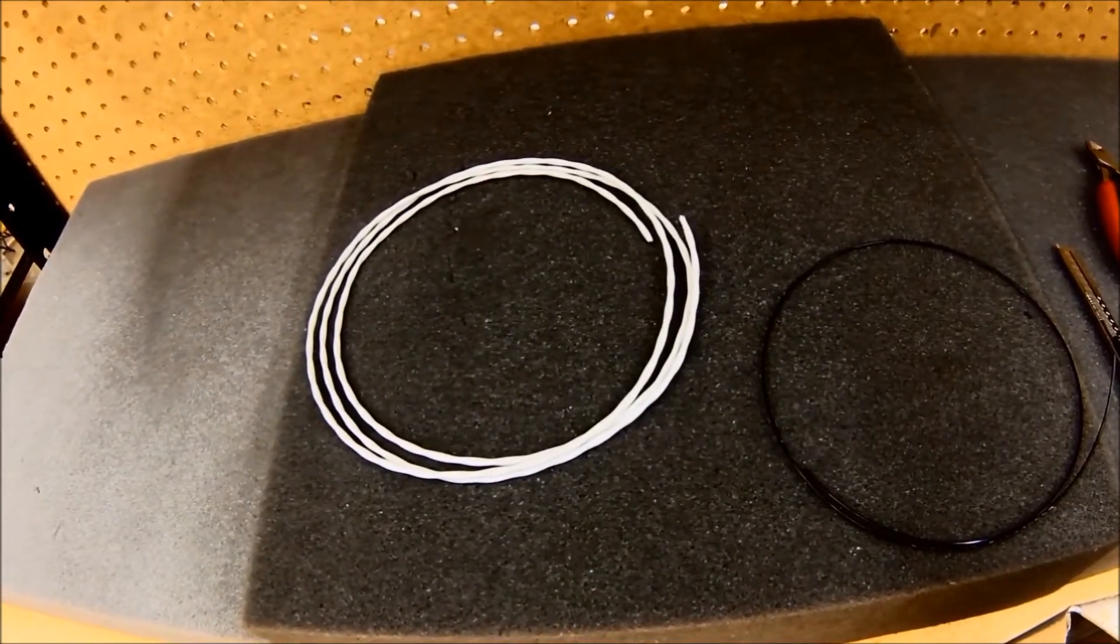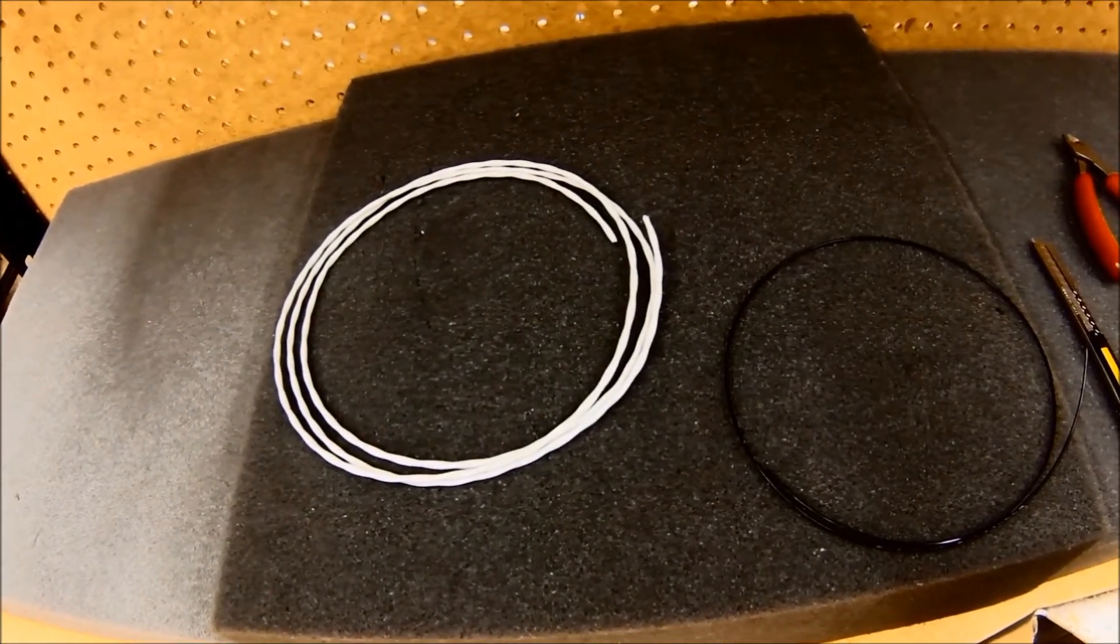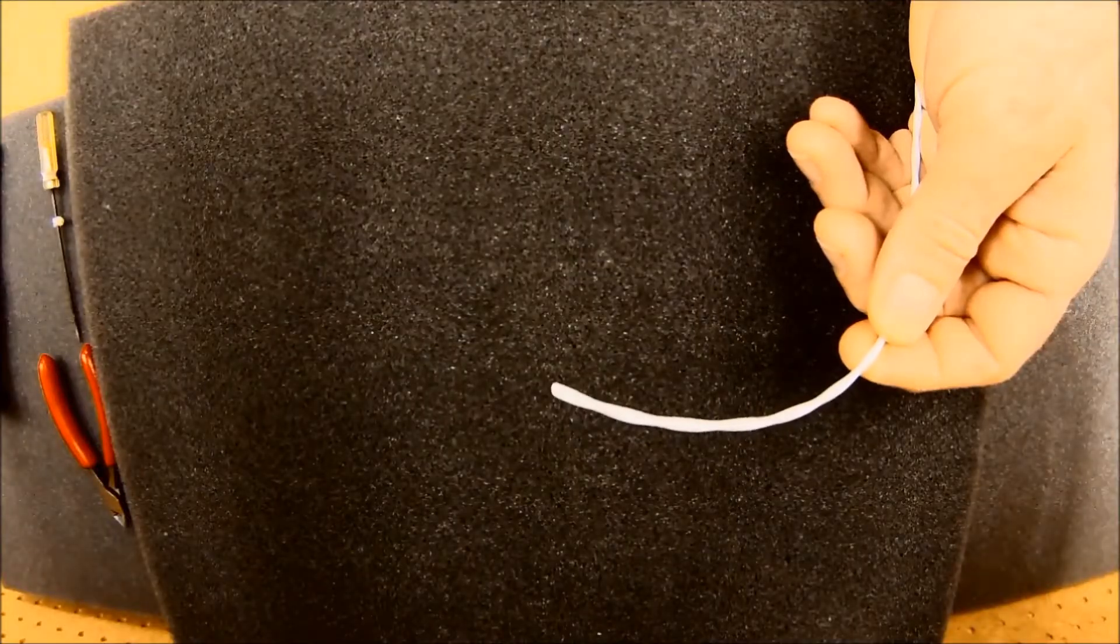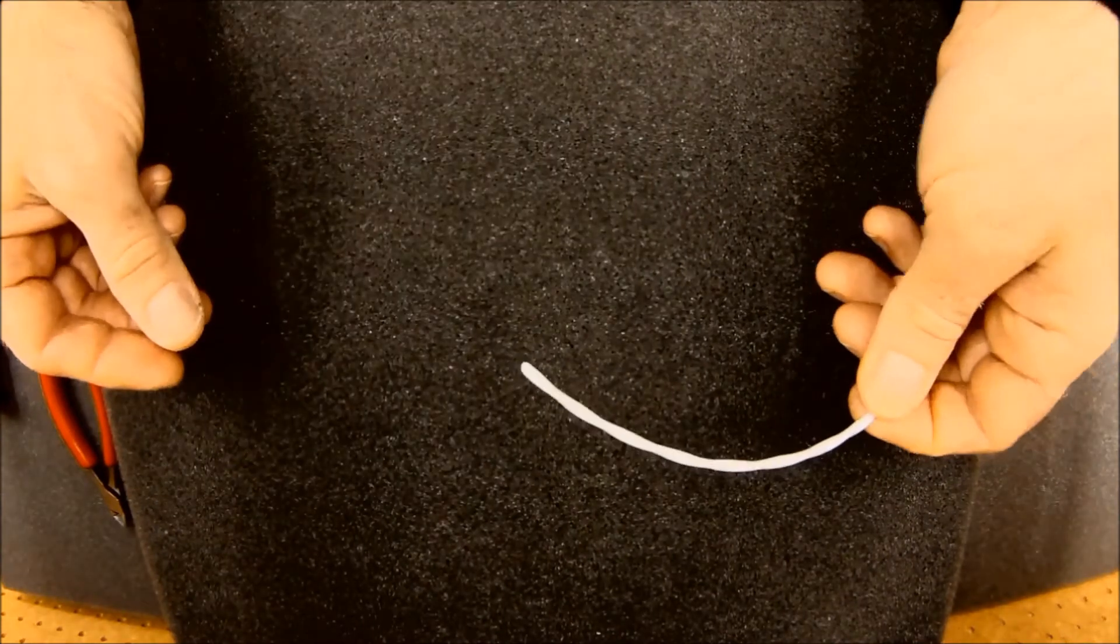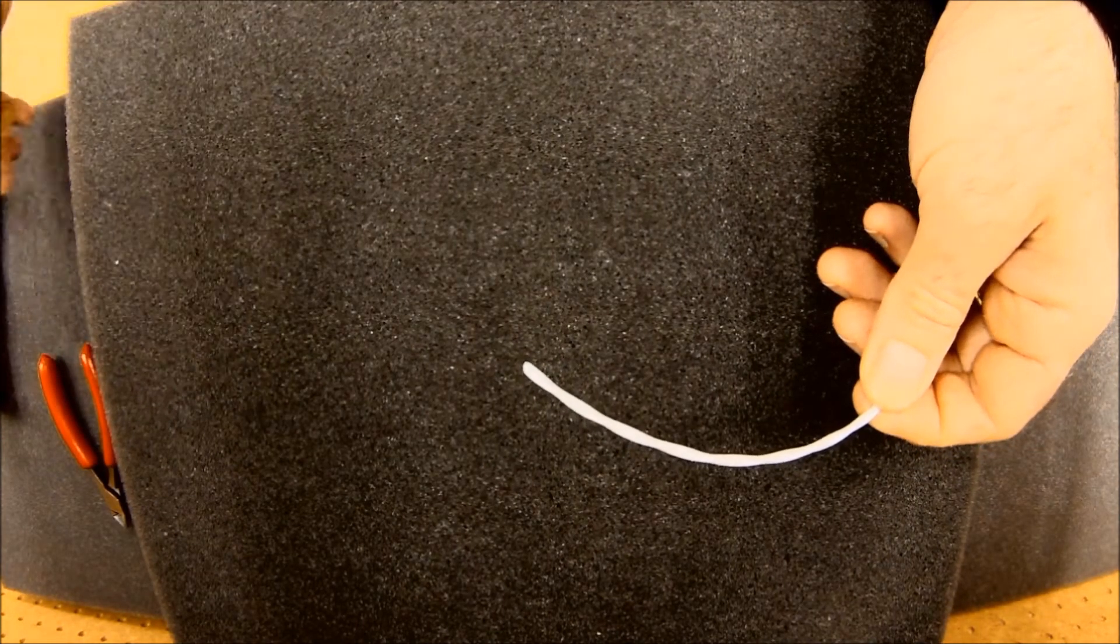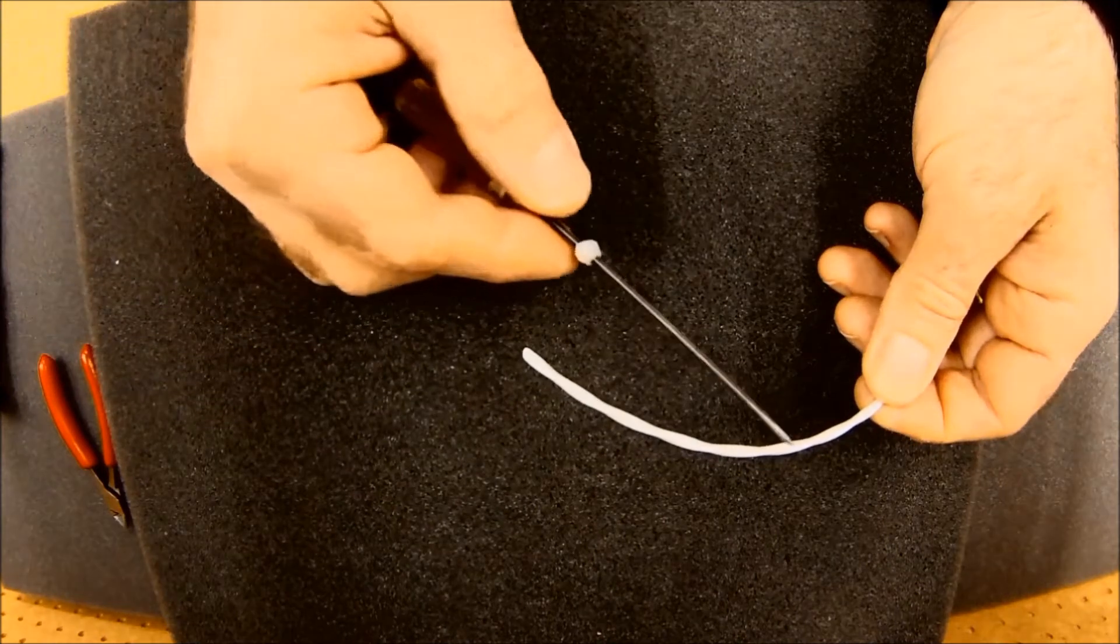Over here, you'll see I have some wire that I'm going to be using for this demonstration. If I'm going to put a pigtail on this piece of 22 gauge 2 conductor, I'm going to start by stripping off the outer jacket.